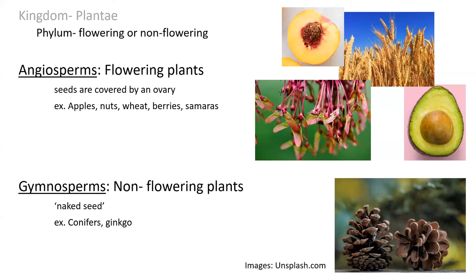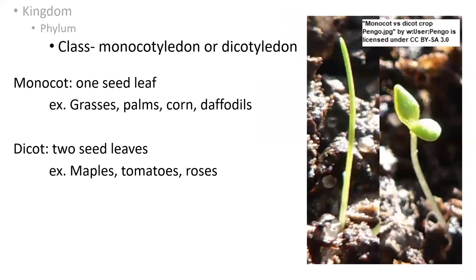Angiosperms are then further divided into two classes — dicotyledons and monocotyledons. The cotyledon is the seed leaf — it's the first leaf that appears out of the soil. A monocot has one seed leaf, and a dicot has two seed leaves that come in little pairs. Those are not the first true leaves — those are seed leaves.